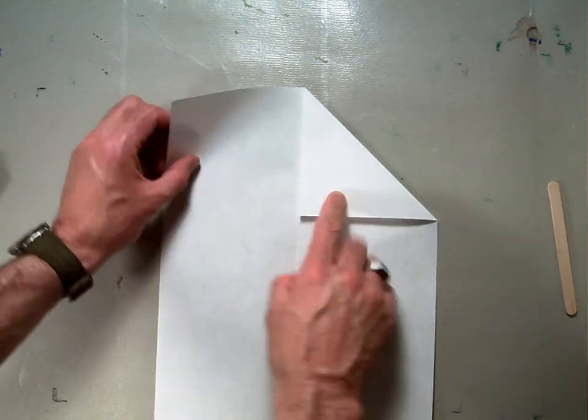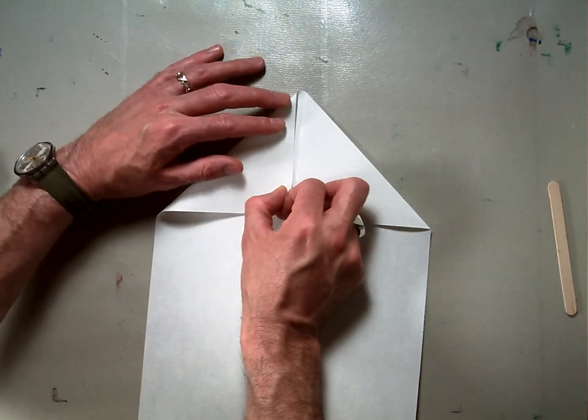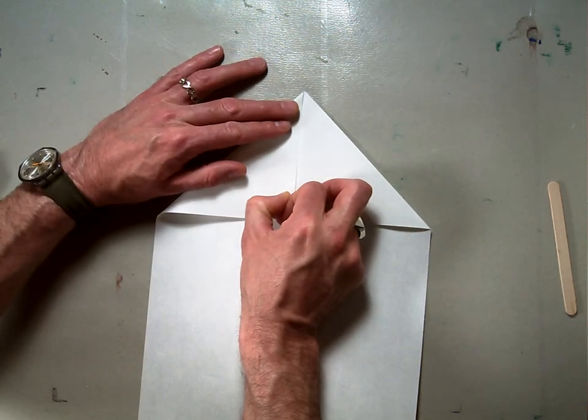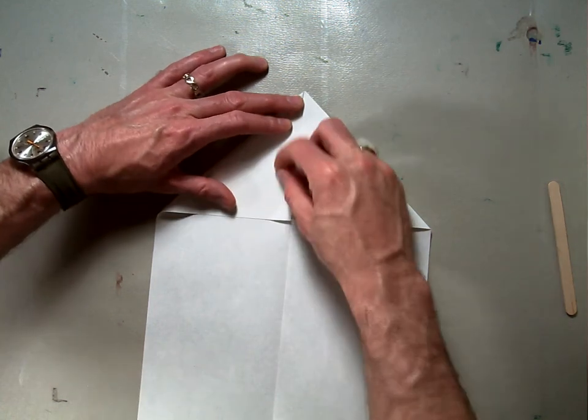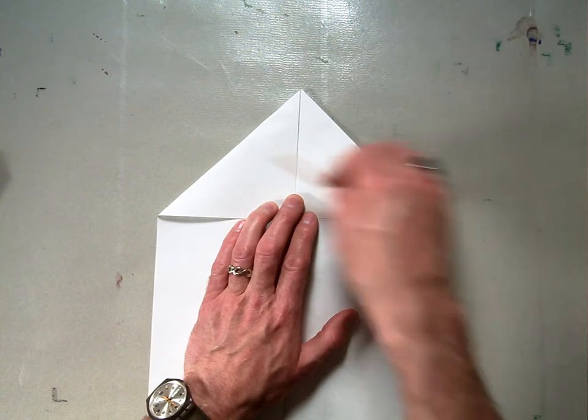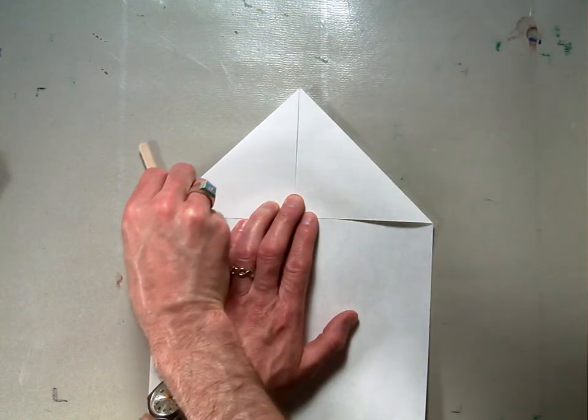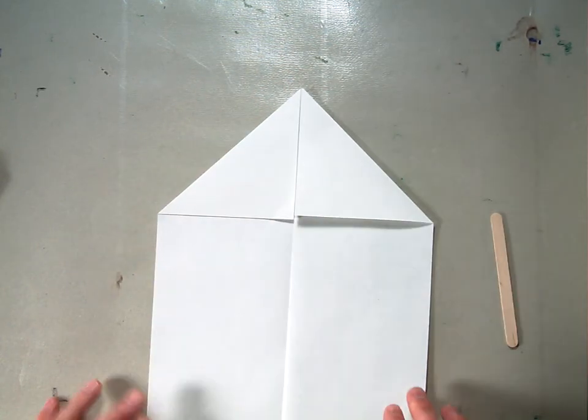Next take the other side and do a symmetrical folding so that you've got this corner folding in exactly the same. Remember don't go over your center line and use your bone folder to crease it nice and strong.